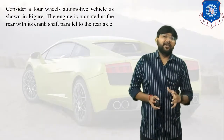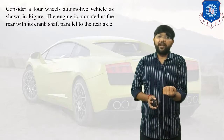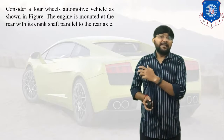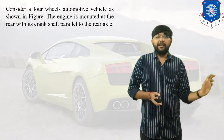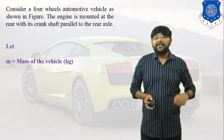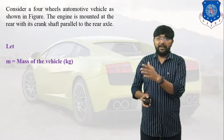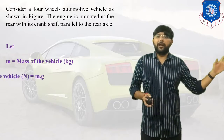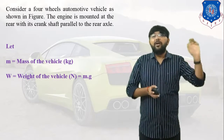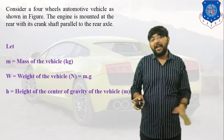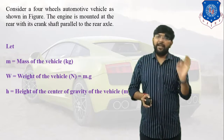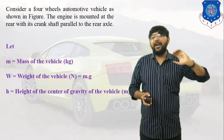Before starting this theory, we discuss some basic terminology. Consider a four-wheel automotive vehicle as shown in the figure; the engine is mounted at the rear with its crankshaft parallel to the rear axle. Small m indicates the mass of the vehicle in kilograms. Capital W is the weight of the vehicle, equal to mg. Small h is the height of the center of gravity — the distance between the center of gravity and the earth surface.